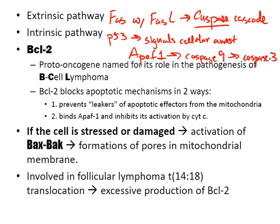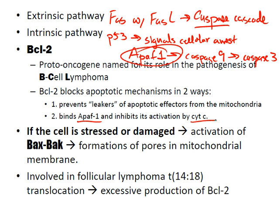BCL-2 is a proto-oncogene named for its role in B-cell lymphoma pathogenesis. BCL-2 blocks apoptotic mechanisms in two ways: it prevents leakage of apoptotic effectors from the mitochondria, and it binds APAF-1, inhibiting activation by cytochrome C. If the cell is stressed or damaged, activation of Bax-Bak leads to formation of pores in the mitochondrial membrane. Bax-Bak also blocks BCL-2 function, leading to cytochrome C release and apoptosis.